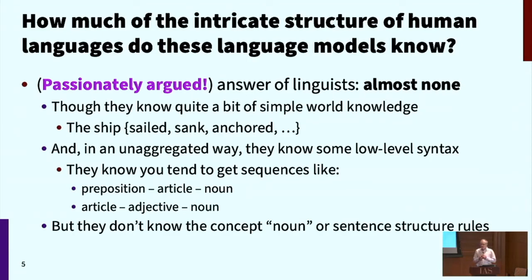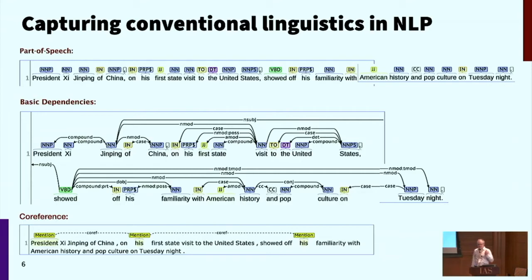For as long as NLP has existed, the approach for capturing the structure of human languages has been to build explicit models that try to put latent structure over sentences. Since about 1990, the main way this has been done is that humans hand-annotate long stretches of linguistic text with structure — such as parts of speech, grammatical structures of sentences, or co-reference: which noun phrases are mentions of the same entity. For example, 'President Xi Jinping,' 'on his first state visit to the United States,' and 'showed off his familiarity' are co-referent. People have spent decades annotating large amounts of human language text with this kind of information, then building empirical machine learning models to recover this kind of structure.